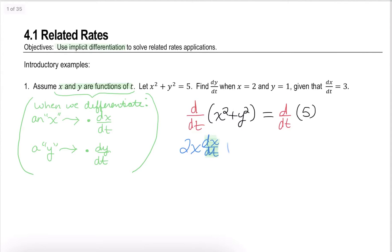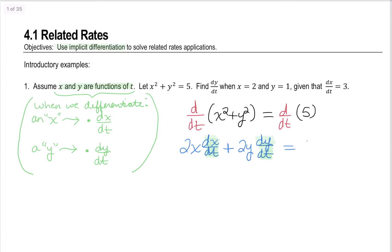Plus, we take the derivative of y², giving 2y. We just differentiated a y, and when we treat y as a function of t, that means we multiply by a factor of dy/dt. The derivative of the constant on the right goes to 0. The problem says find dy/dt when x is 2 and y is 1, given that dx/dt is 3.